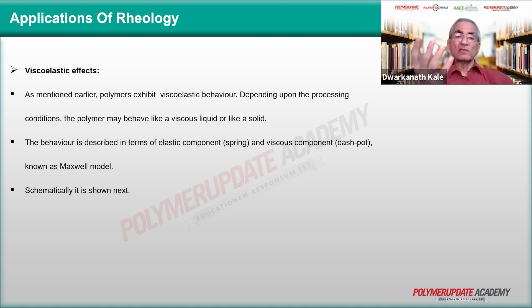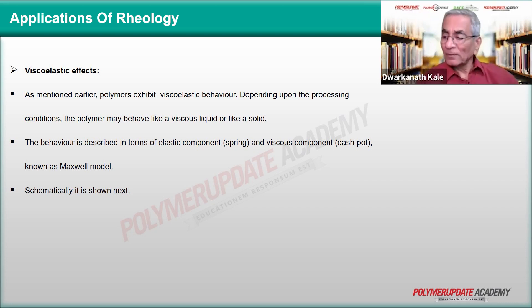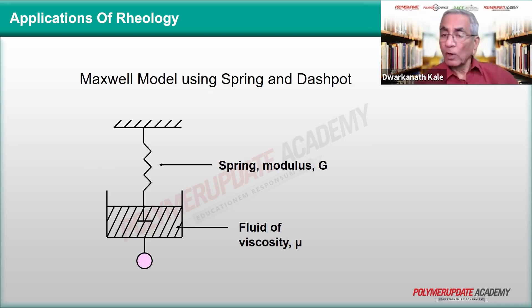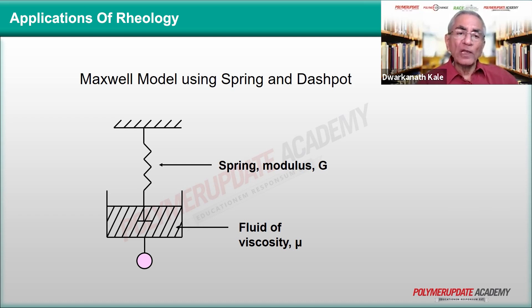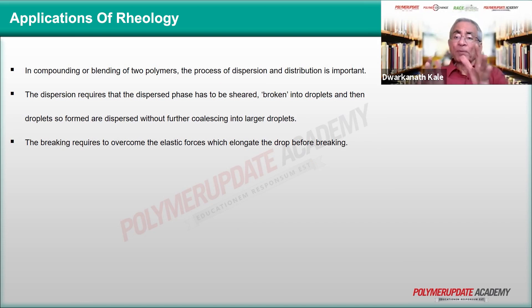Viscoelasticity is normally expressed in terms of parameters or a mathematical model, where the elastic part is connected to spring-like behavior — a spring of modulus G — and the viscous part is considered as a complete fluid. We consider it as made up of two elements: one which is viscous and one which is totally elastic. They are joined either in series or in parallel; that is the mathematical part.